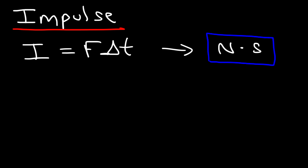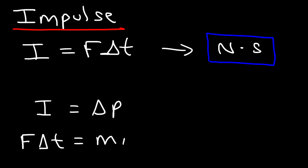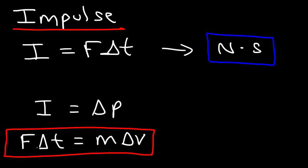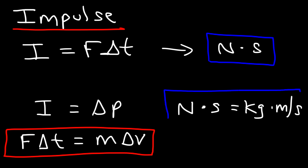There is something known as the impulse-momentum theorem. According to this theorem, the impulse is equal to the change in the momentum of the object. So a force acting on an object for a given time interval equals the mass times the change in velocity. The unit for impulse is newtons times seconds, and the unit for momentum is kilograms times meters per second — these units are equivalent. Newtons times seconds typically corresponds to impulse, and kilograms times meters per second to momentum.